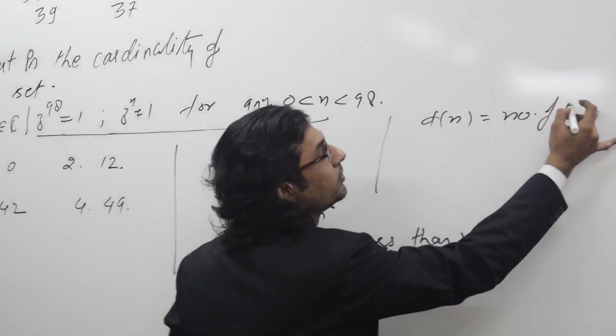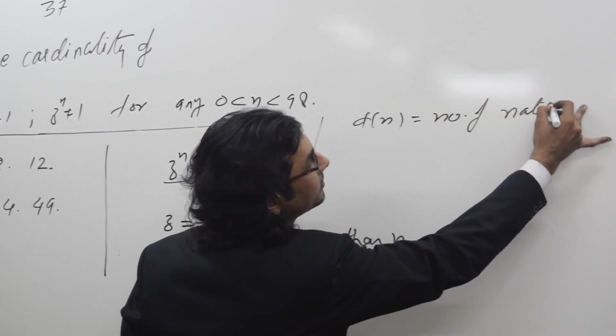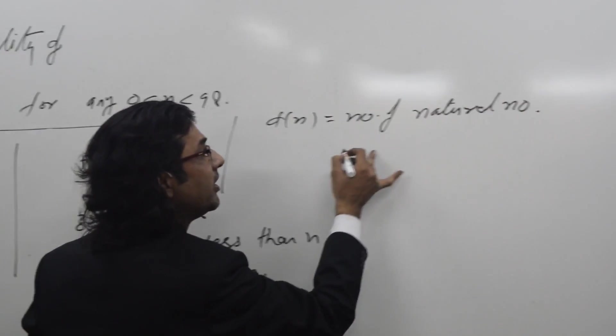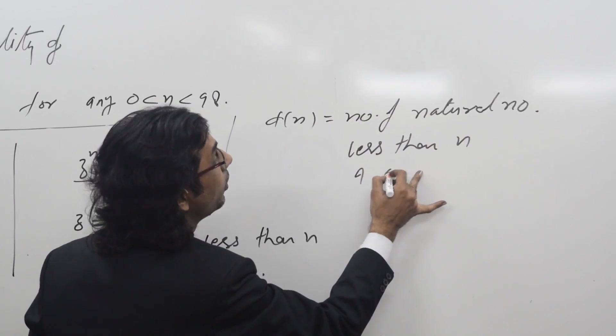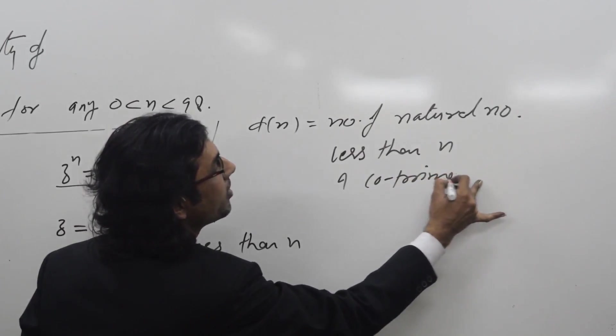This gives you the number of natural numbers less than n and co-prime to n.